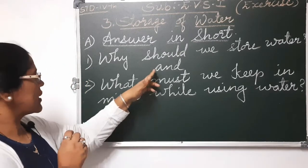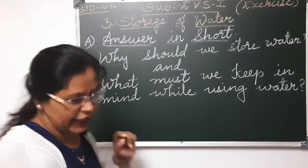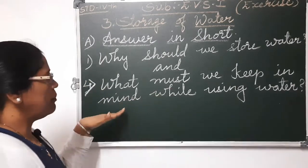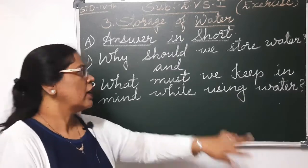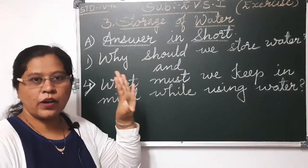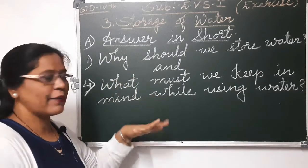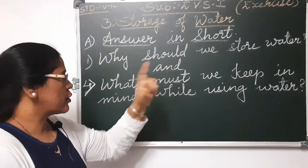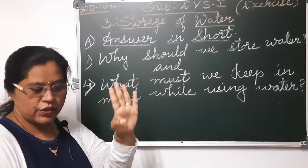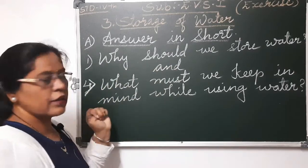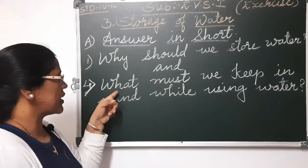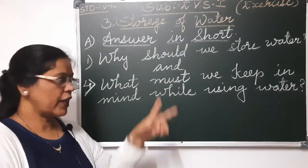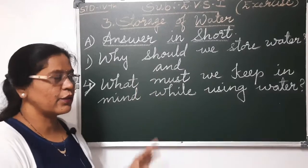The second question in your textbook is actually the fourth question — what must be kept in mind while using water? These two questions have the same answer, so you can write down that same answer for both. The fourth question is on page number 19 of your EBS 1 textbook.